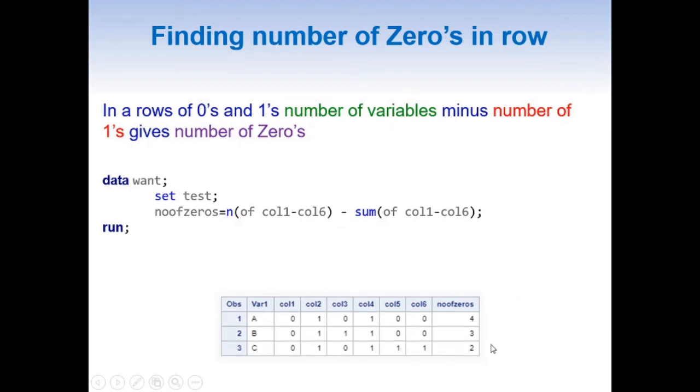Here is a proc print of the data set created above. It contains number of 0s column. And here let's try to understand our results for a couple of rows. Here we have 4 0s and we got number of 0s as 4.